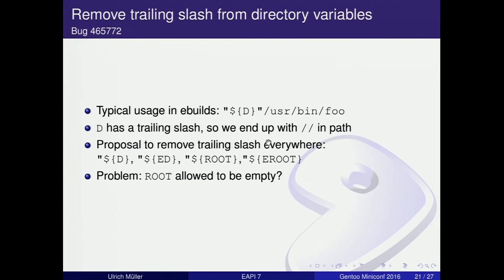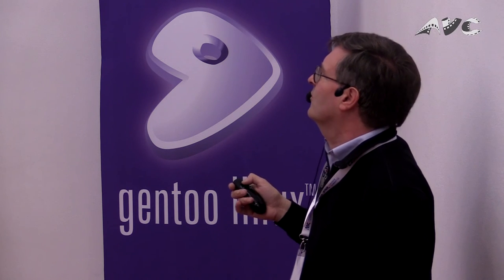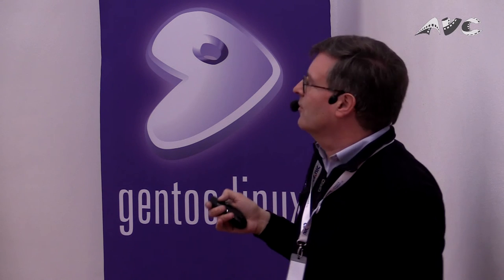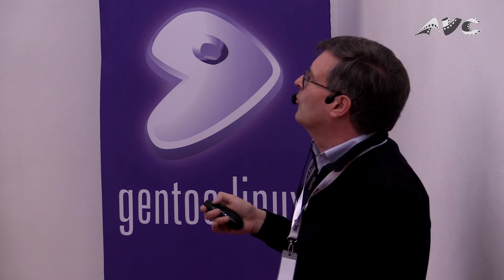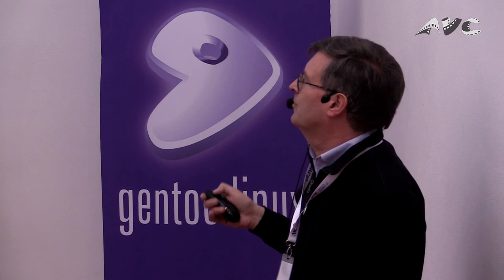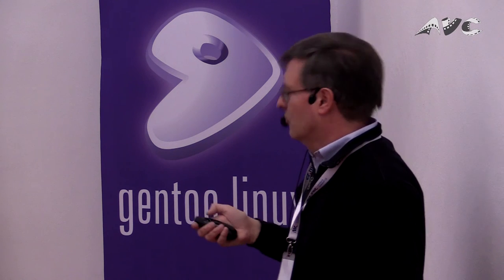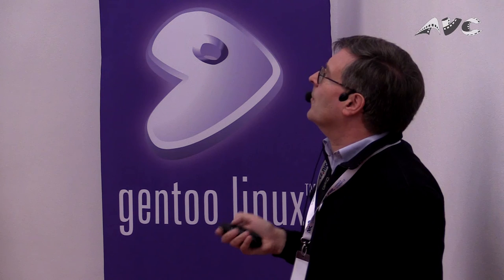It's proposed to remove the trailing slash from all directory variables. Some of them have trailing slashes — like $D and $ROOT, which have a slash at the end. This typically leads to double slashes in paths, which is not a big issue, but the proposal is to remove the slash everywhere. One question is: can ROOT be empty in the most common case? And yes, why not?